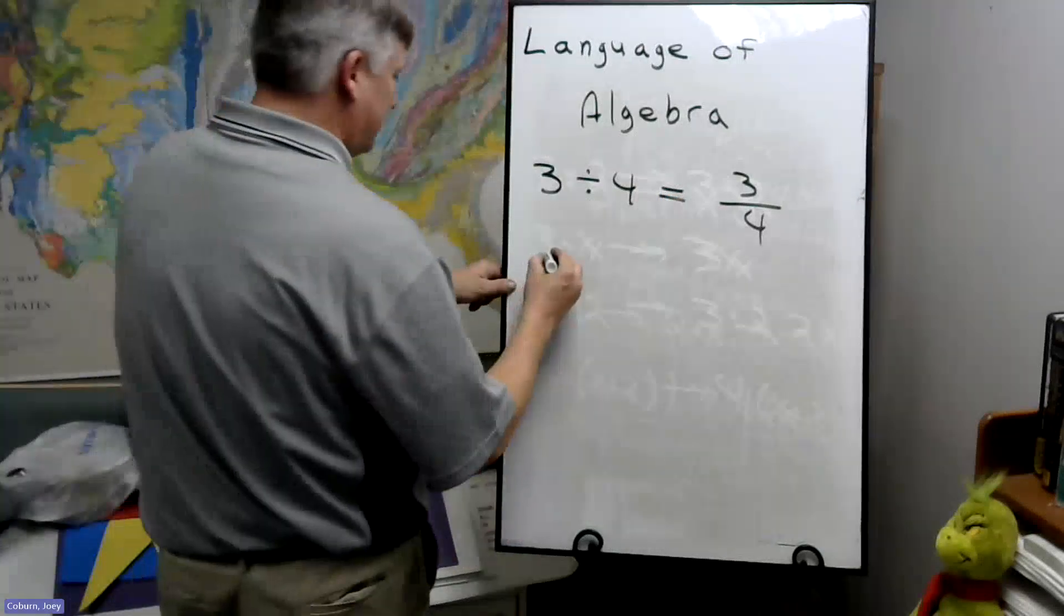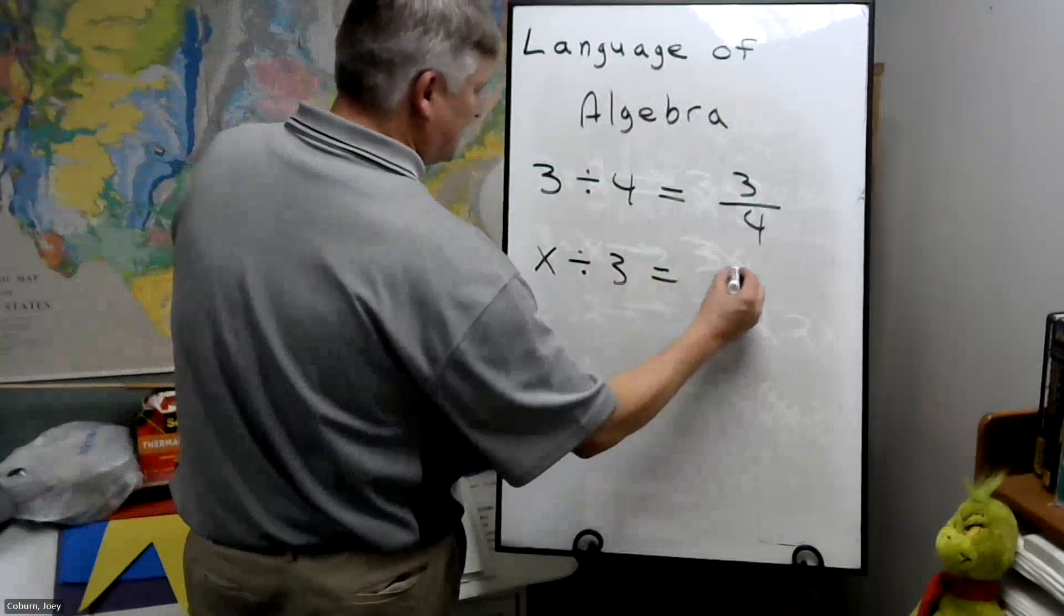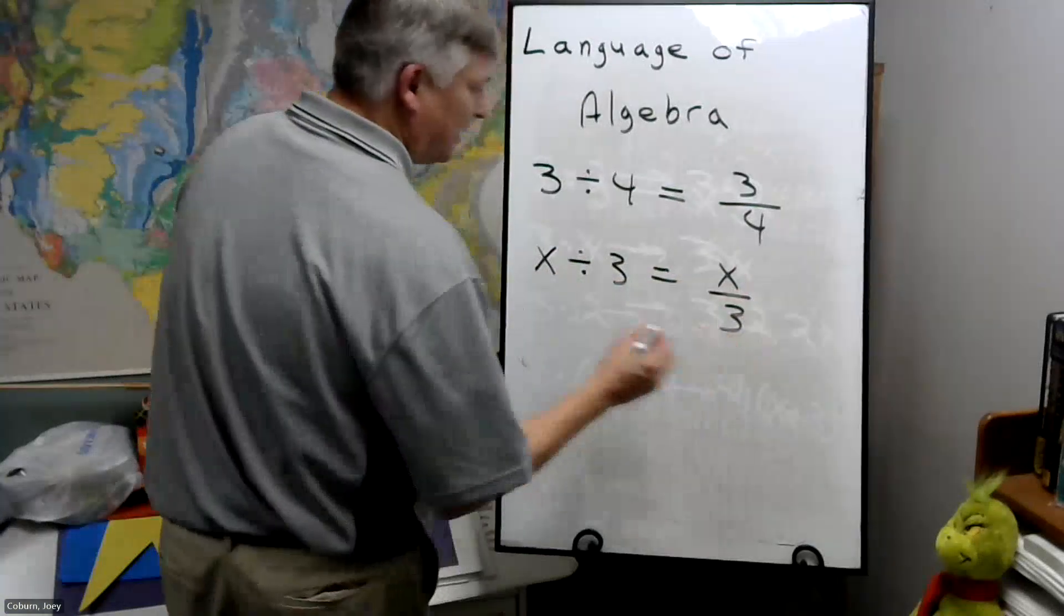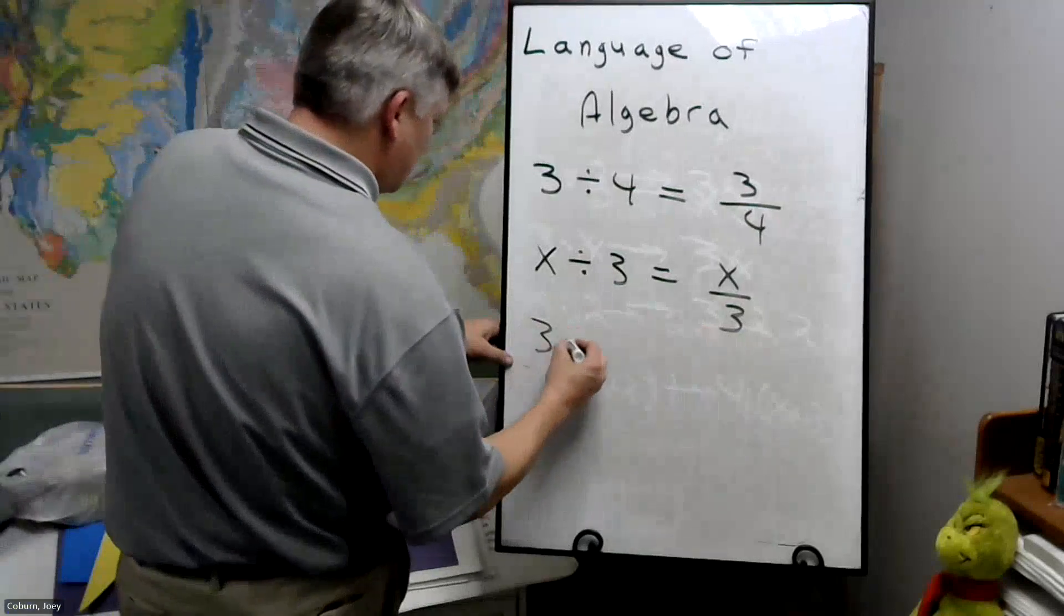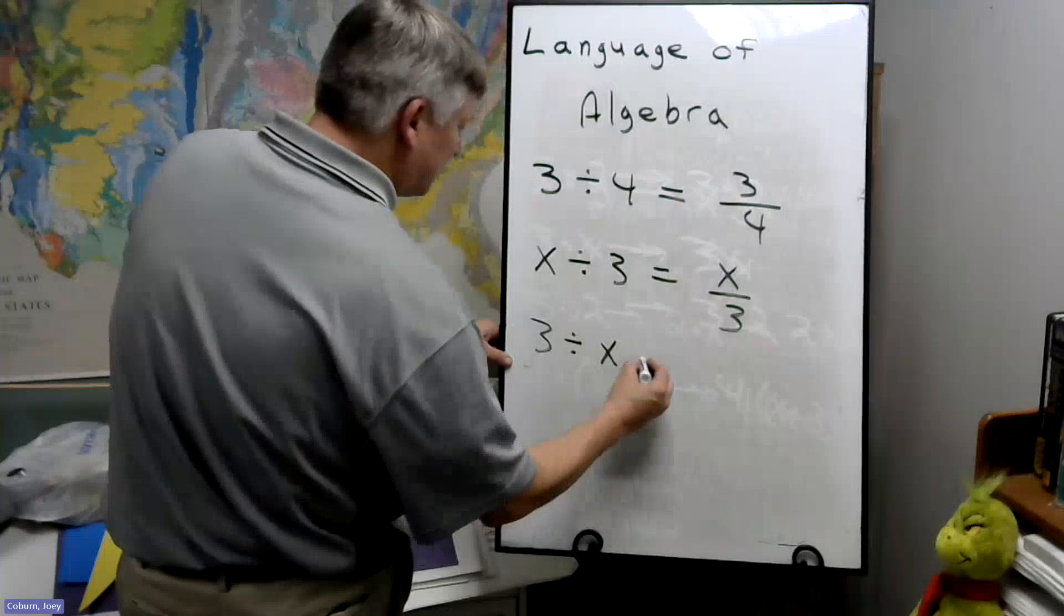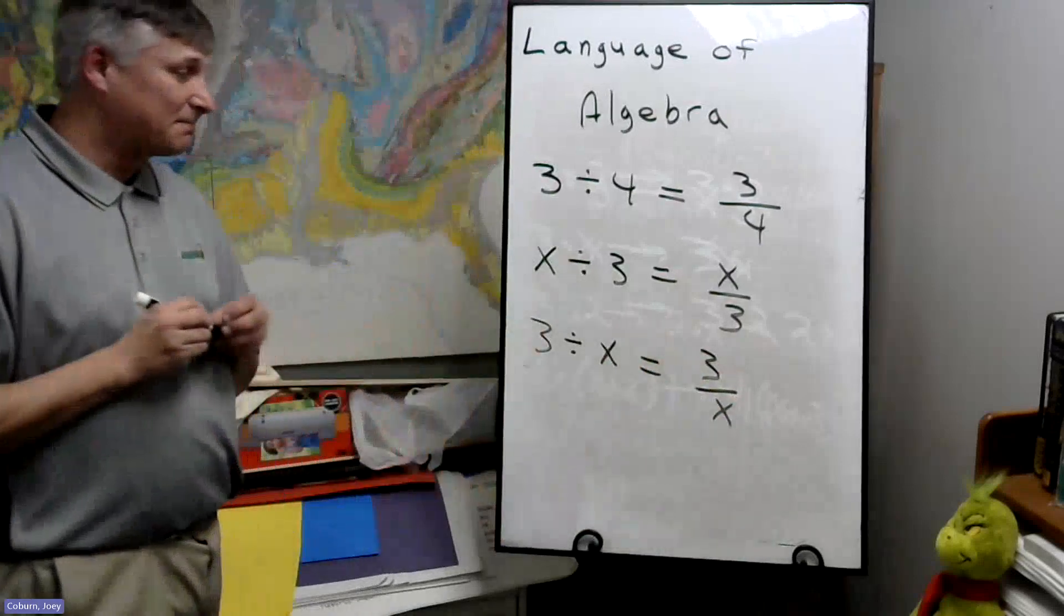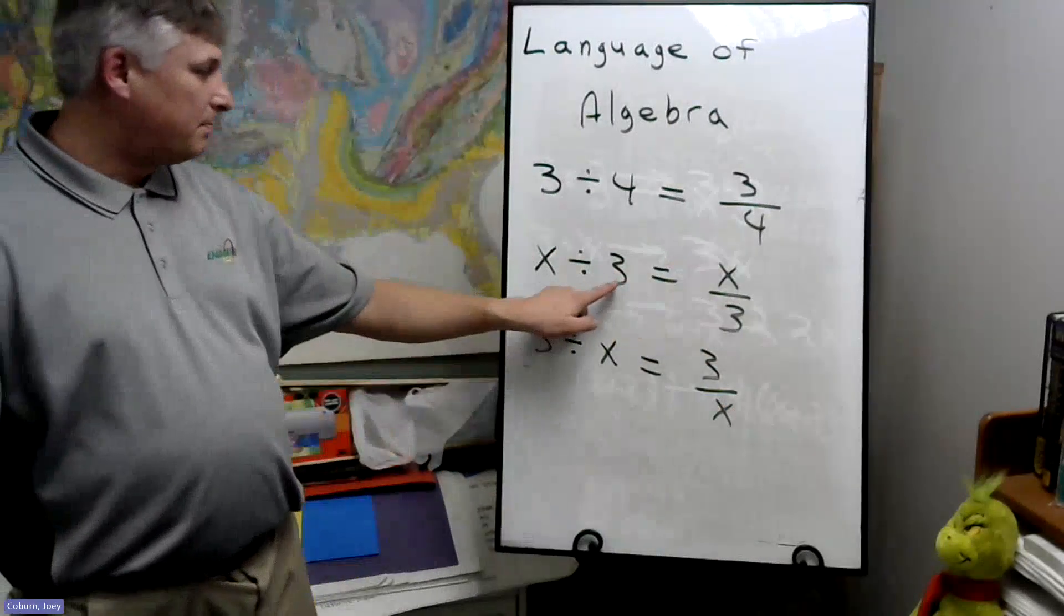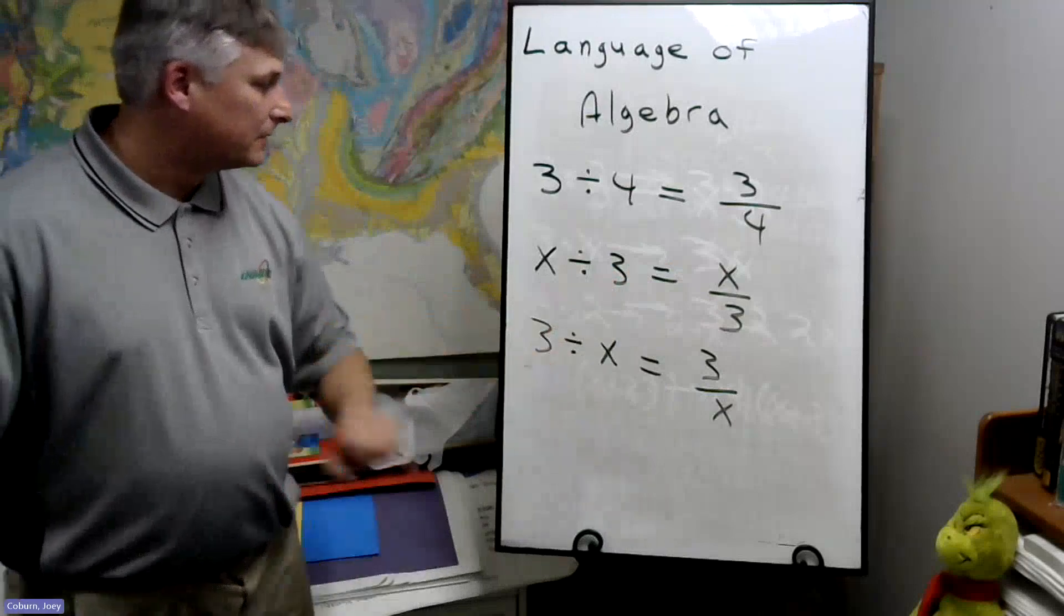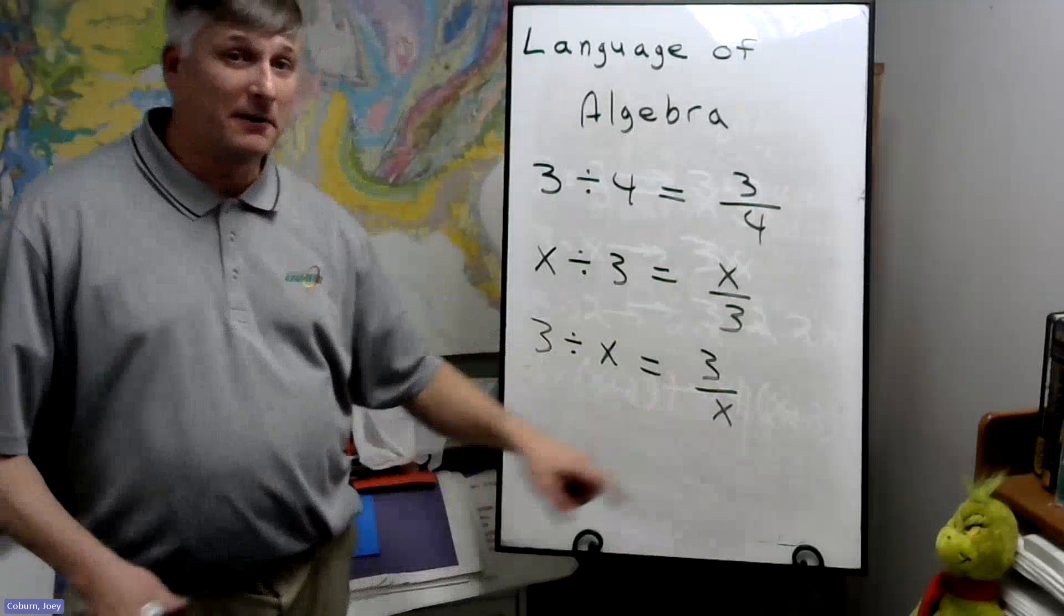So if you have X divided by 3, this is the same as X over 3. And likewise, if you had 3 divided by X, this would be 3 over X, where the front number is always on top, the second number is always on the bottom, or if it's an unknown number like a variable.